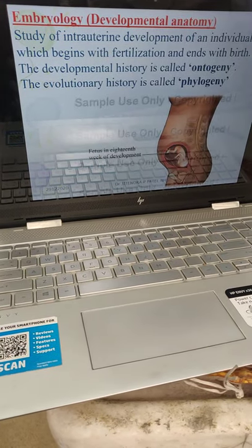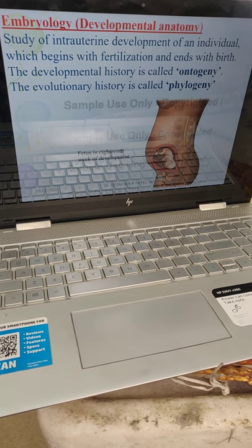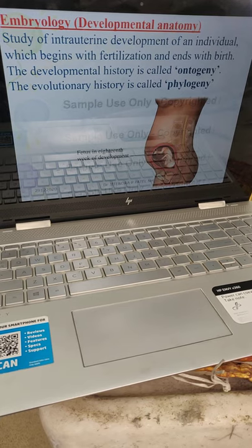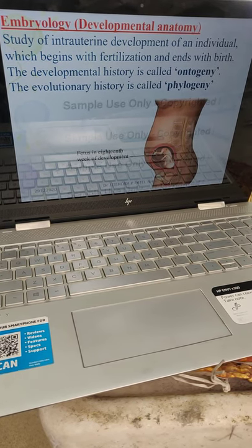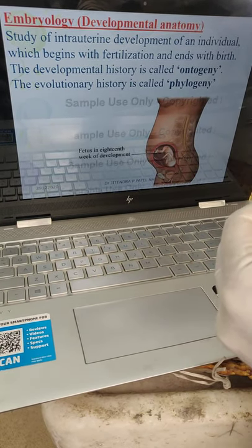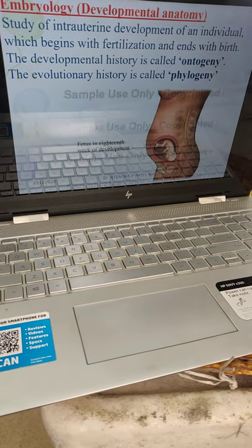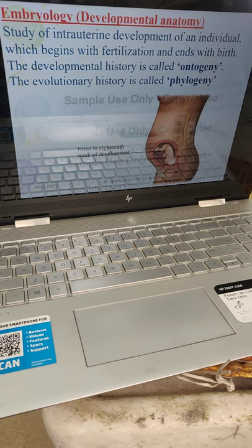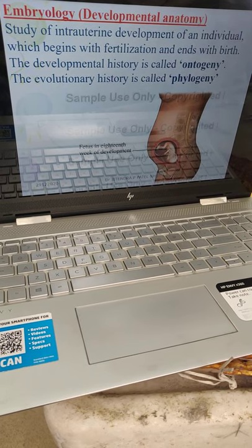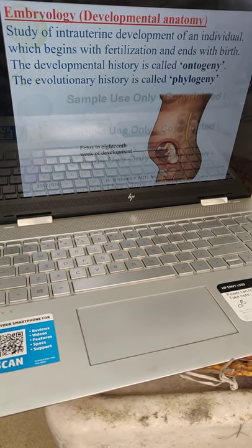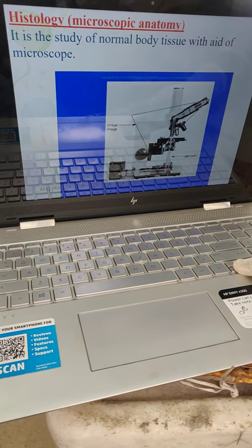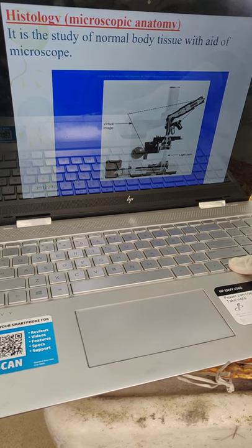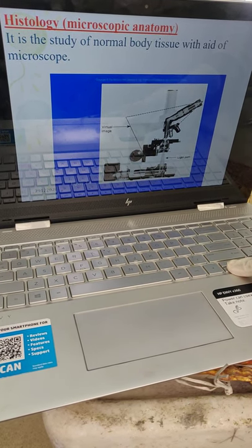What is embryology — or it is called developmental anatomy. Study of intrauterine development of an individual which begins with fertilization — sperm and ovum unite; it is called fertilization, and ends with birth. It is called embryology. Developmental history is called ontogeny, while evolutionary history is called phylogeny. We already discussed histology — microscopic anatomy. It is the study of normal body tissue with the aid of a microscope. It is called histology.